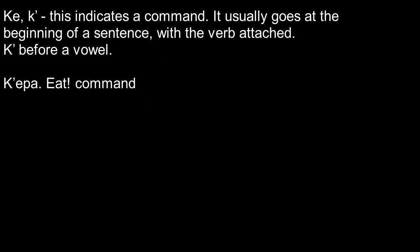Ke, or k before a vowel, indicates a command. It's placed at the beginning of the sentence, and the verb is usually attached to it rather than the subject, because that would look weird — and usually the subject is implied. For example, kepa means 'eat.' The 'you' — gar — is implied, so you don't have to say it.